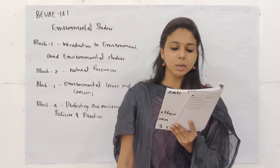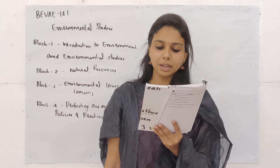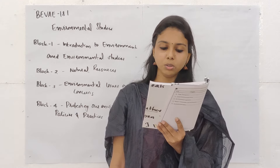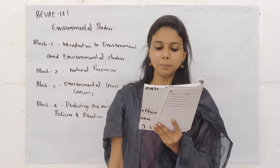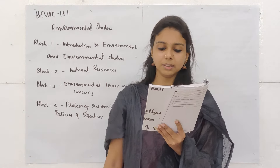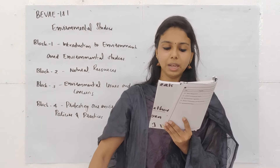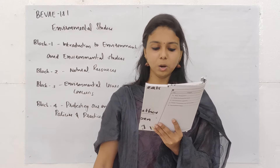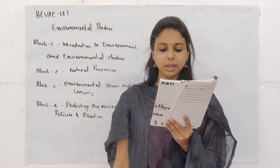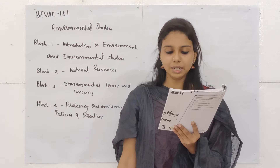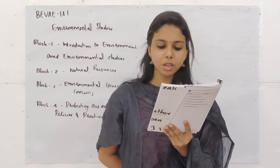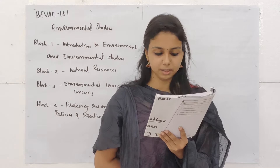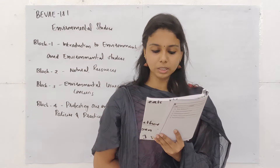Question 11: At the global level, the region most prone to natural calamities is? Options: A. Australia, B. Asia, C. Africa, D. Latin America. Asia is the right answer.